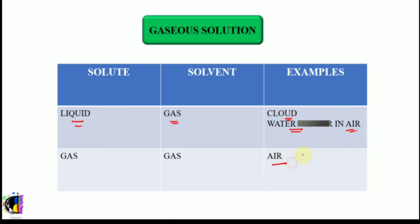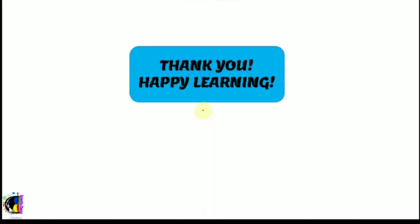The second gaseous solution combination is gas plus gas. A very easy example is air — you have oxygen, nitrogen, hydrogen, helium, and other gases all mixed together. The solute is in lesser amount and the solvent in larger amount. Nitrogen is the most abundant gas in the atmosphere at around 78%, and the other gases have different compositions. These different gases mixed together form the atmosphere. So these are all the different types of solutions based on the physical state of solute and solvent — liquid, solid, and gas.